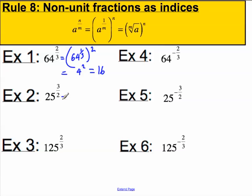25 to the 3 over 2, that's equal to 25 to the 1 3rd, all to the power of 3. What does 25 to the 1 3rd mean? It means the square root of 25. Square root of 25 is 5, so this must equal 5 cubed, which is 125.